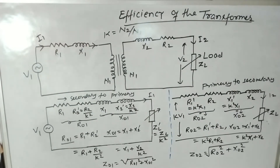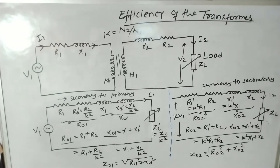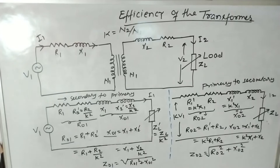Today we are going to discuss the efficiency of the practical transformer. Usually a transformer is a non-moveable device, and because of that there is no friction loss in the transformer. Therefore, the efficiency of a transformer is very high — near around 95% to 99%. When we use a power transformer, there is significantly very high efficiency, also near around 99%.